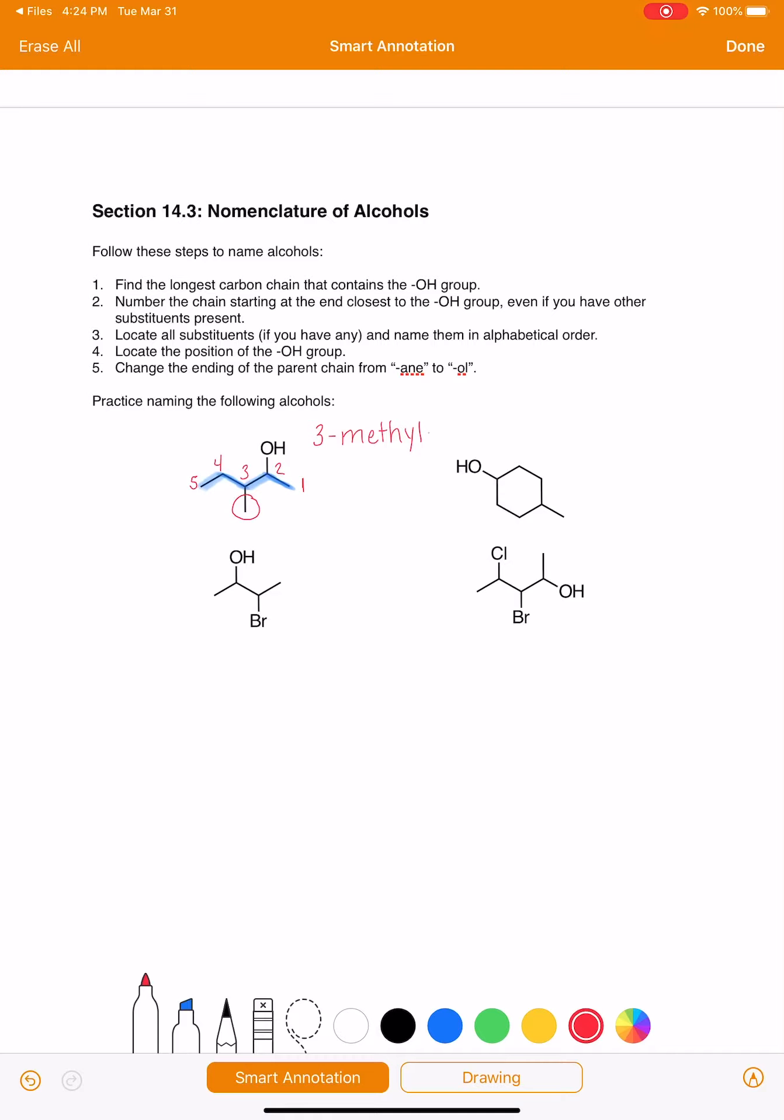Now that we have the substituents located and named, we want to locate the alcohol. The alcohol OH is on carbon number two. Now we're going to name the parent chain. It's a five carbon chain, so it's a pentane. But instead of saying pentane, we drop the E and say pentanol.